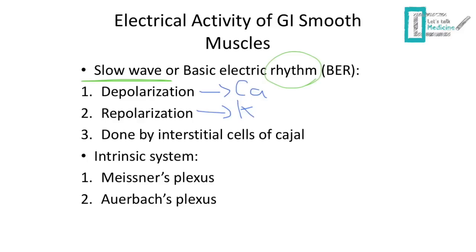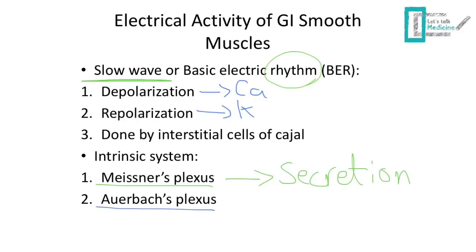Jumping into neural control, we have an intrinsic system and an extrinsic system. The intrinsic system consists of two plexuses. The first is the Meissner plexus, found in the submucosal layer, and it's very important in regulating GI secretions. The second is the Auerbach's plexus, found between the two layers of the muscularis externa — between the circular layer and the longitudinal layer — and it's very important for movement and peristalsis.